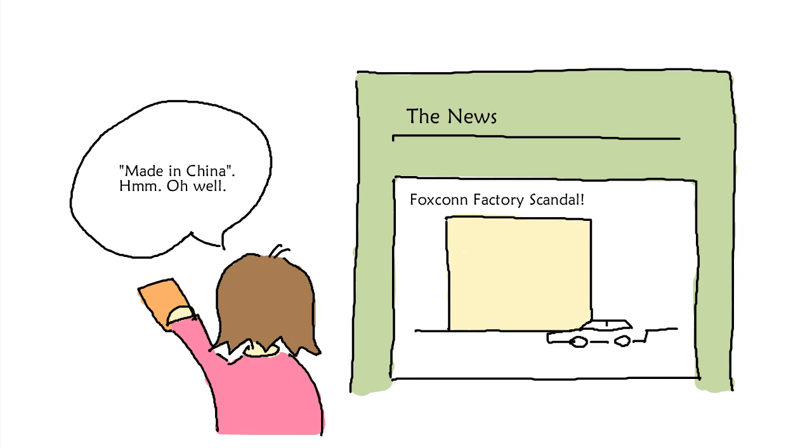Foxconn is the world's largest electronics manufacturing company and assembles products, most notably for Apple. Starting in 2009, 20 workers jumped off the roofs, most of them fatally. The stories became massive news. What could be so wrong about the conditions in those factories that it would cause workers to take their own lives?